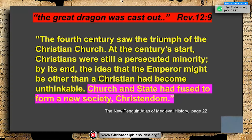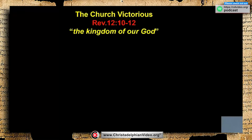Elsewhere in Revelation there are three earthquakes, and this is one of them. Why does the Lord describe it as an earthquake? Because it changed everything. The second earthquake is the French Revolution — why an earthquake? It changed this whole process entirely into the democracy we understand today. The third earthquake we await when the Lord comes. In verses 10 to 12, it seems almost to say here is the kingdom of God — but it doesn't quite say that if you read it carefully.